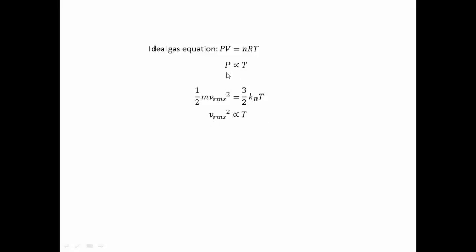By relating these two proportionality relations, we can see that the square of the root mean square velocity is directly proportional to the pressure of the system.